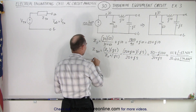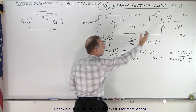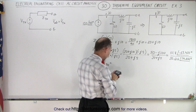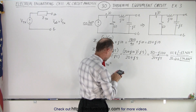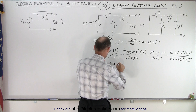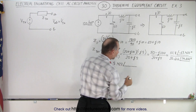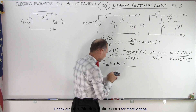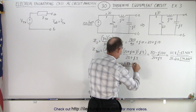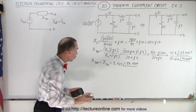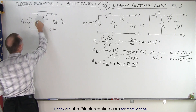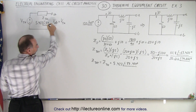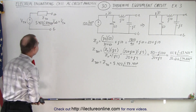The total impedance Z_total as seen from AB equals the Thevenin impedance, which is 111.8 divided by 20.616 = 5.423, with a phase angle of minus 63.435 minus 14.036 = minus 77.471 degrees. So the Thevenin equivalent impedance is 5.423 at an angle of minus 77.471 degrees.